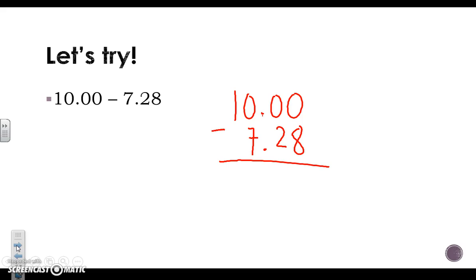Our first part of this problem asks us to do 0 minus 8 which we know we can't do. So we look at the number to the left which is still a 0, we keep looking, another 0, we have to go all the way over to the tens place to borrow.